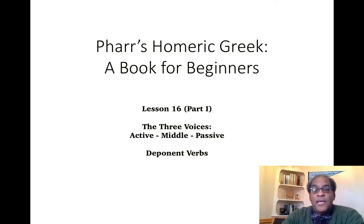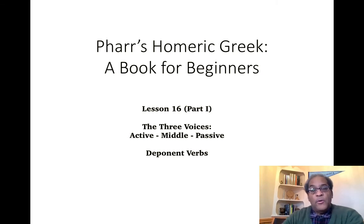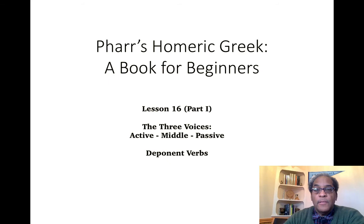Good morning, scholars. Today we're going to continue our way through Pharr's Homeric Greek, a book for beginners, by starting in on Lesson 16. Here we will discuss the three voices that a Greek verb can take — active, middle, and passive. We'll also discuss the nature of deponent verbs, that is, verbs that have middle or passive forms with active meaning.